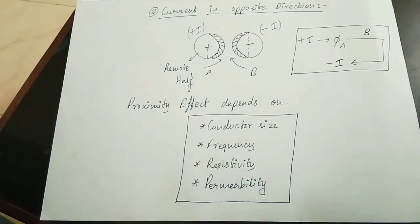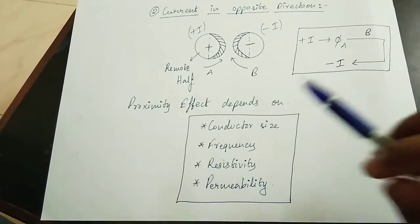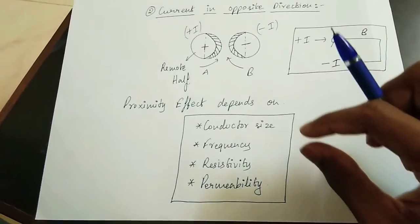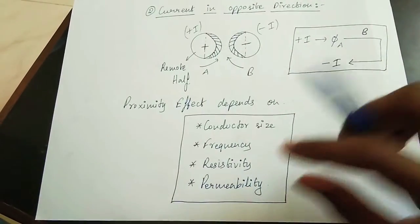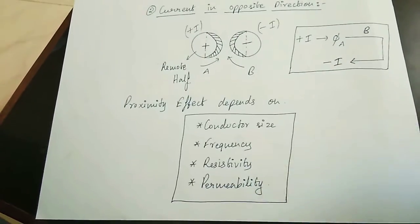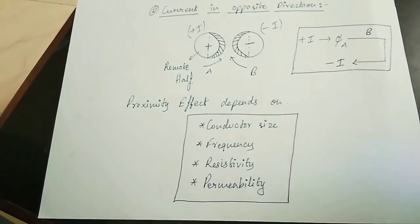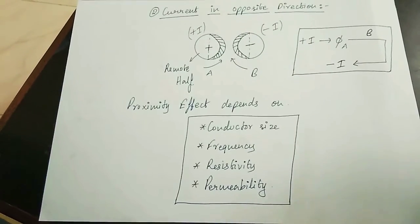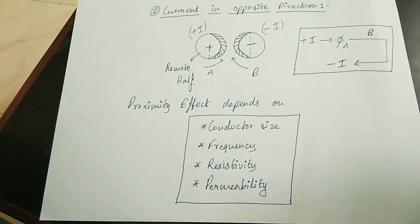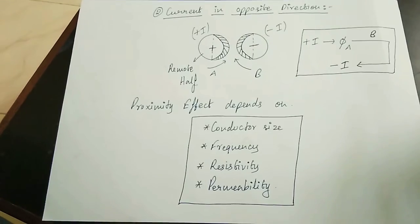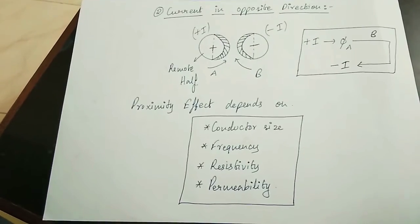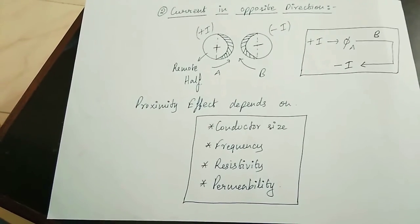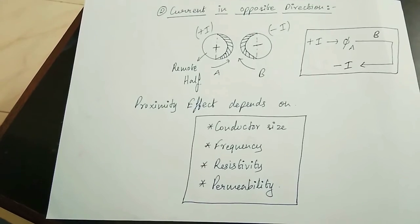The proximity effect is dependent on the conductor size, frequency, resistivity, and permeability. All of these factors affect the proximity effect.